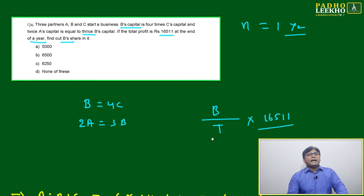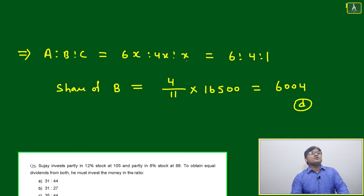For the total, we have A:B:C. If C is x, then B will become 4x. If B is 4x, then A will become 6x. That's it.